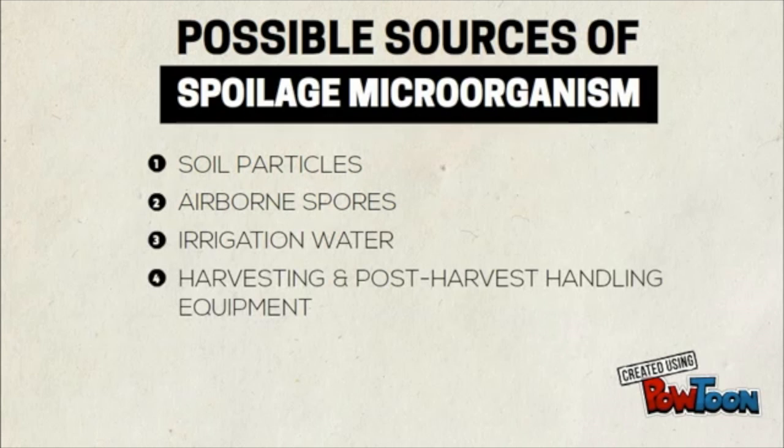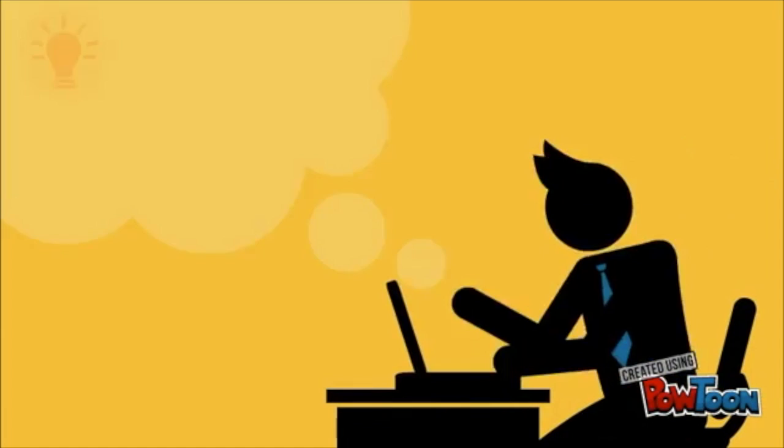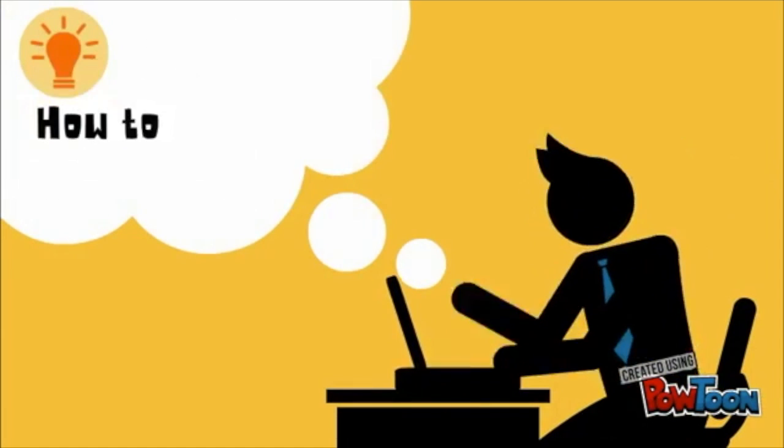Possible sources of microorganisms are soil particles, airborne spores, irrigation water, handling equipment, storage facilities, and food contact surfaces.